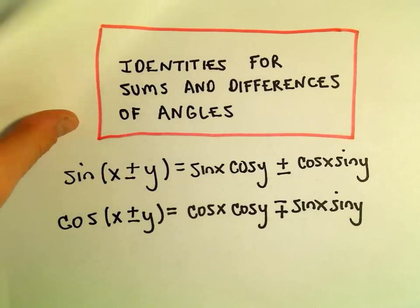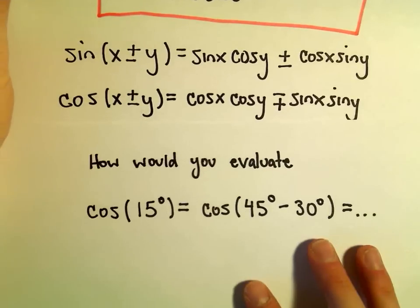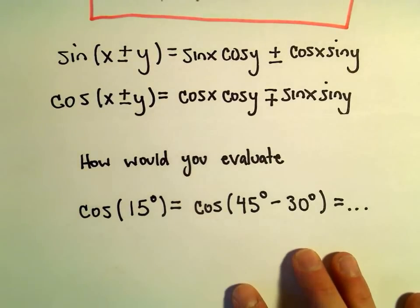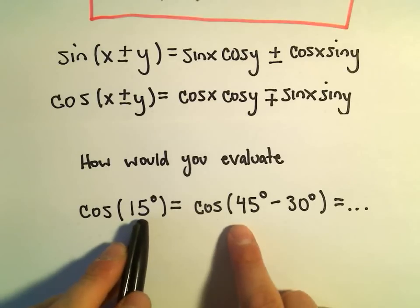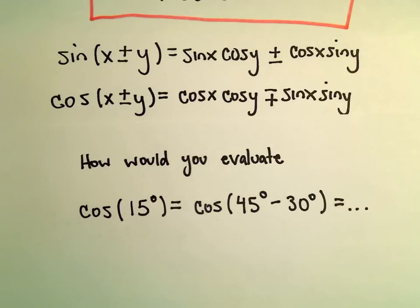Alright, so another example here of using our sum and difference identities. Suppose we just want to simply evaluate cosine of 15 degrees. Well, we can write 15 degrees as 45 degrees minus 30 degrees.